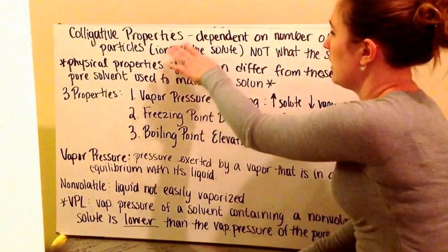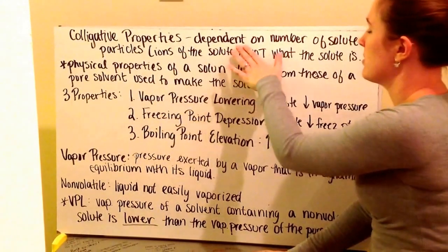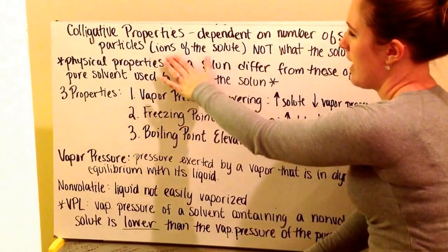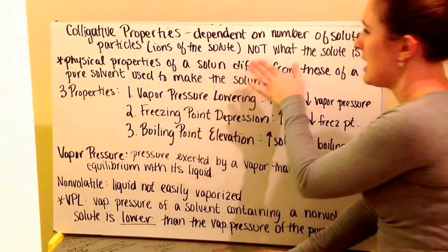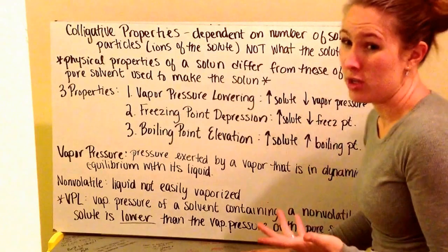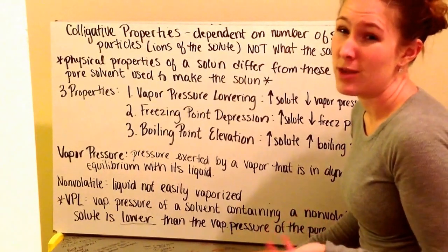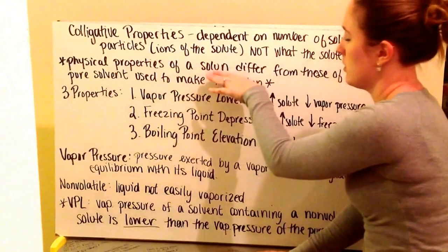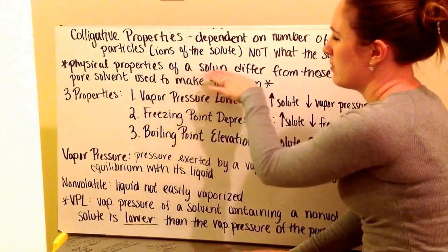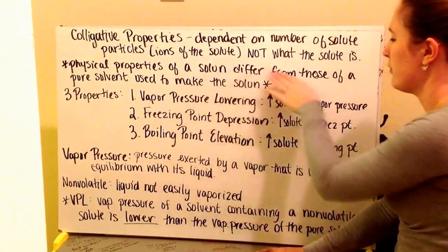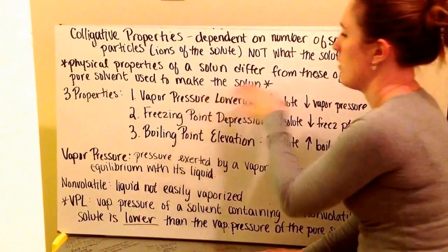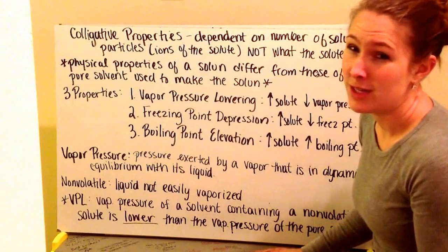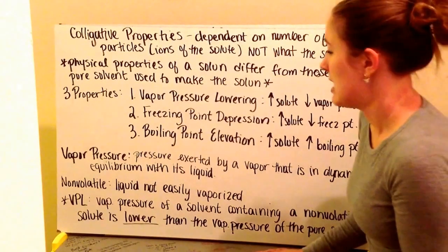Colligative properties are properties that are dependent upon the number of solute particles, which are the ions of the solute. They're not dependent on what the actual solute is — it's dependent upon what that solute breaks into. These are physical properties of a solution, and these physical properties of the solution are going to differ from those of the pure solvent used to make that solution.